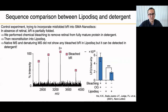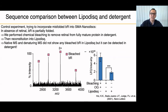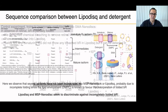We did a control experiment by incorporating misfolded BR into SMA nanodisc. From the literature, when there is no retinal bound to BR, it is partially folded and cannot go inside lipid particles. We performed chemical bleaching to remove retinal from the fully mature protein in detergent, then tried to reconstitute in lipodisc via liposomes, and performed native mass spectrometry. Very interestingly, we were not able to detect any signal from the bleached BR in lipodisc.